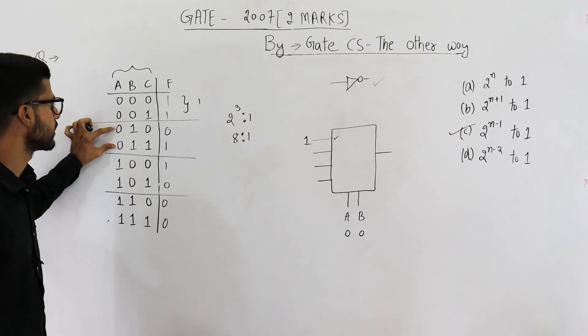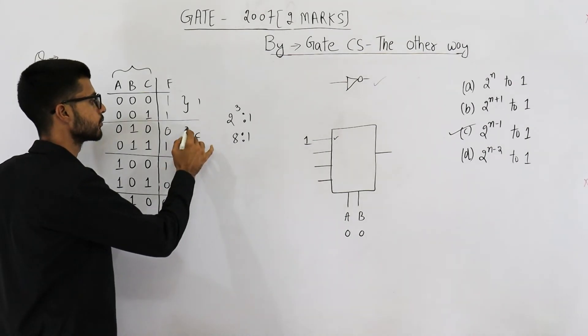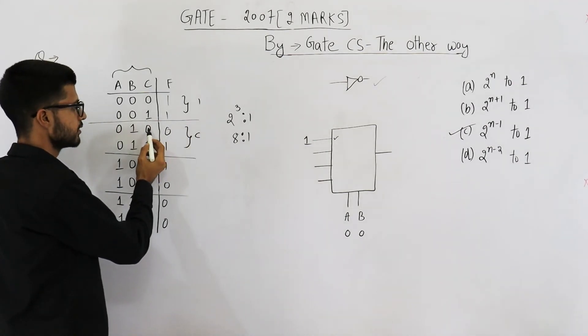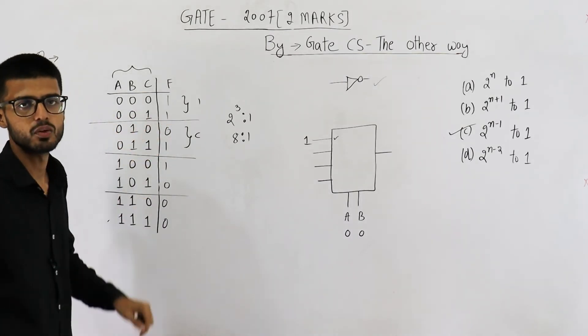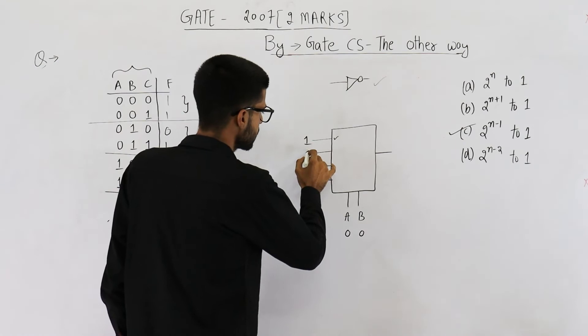Whenever value of a and b is zero one the output is c. C zero zero one one. That means whatever is c is the output. So you can simply connect c here.